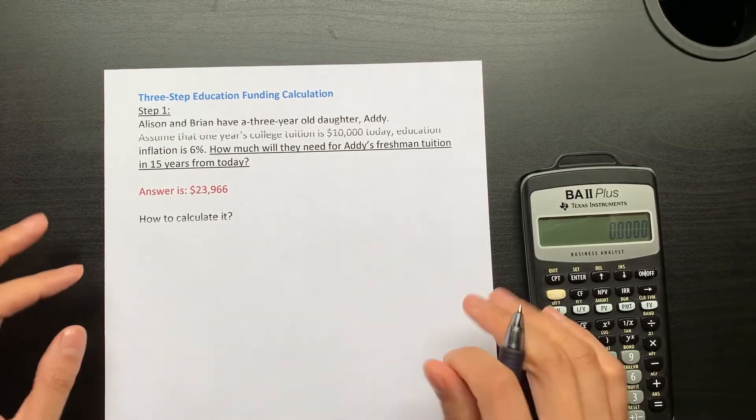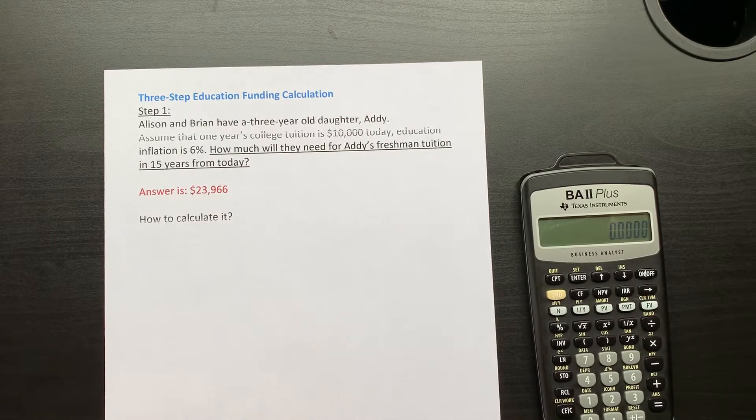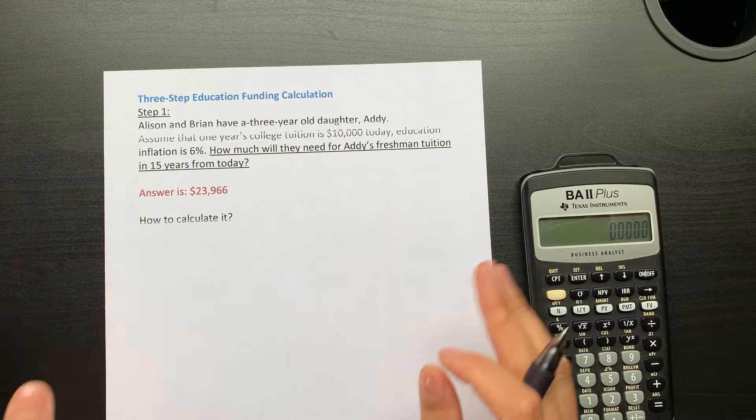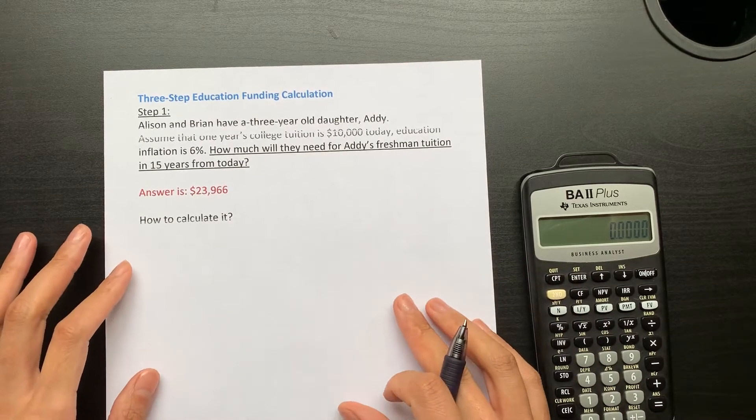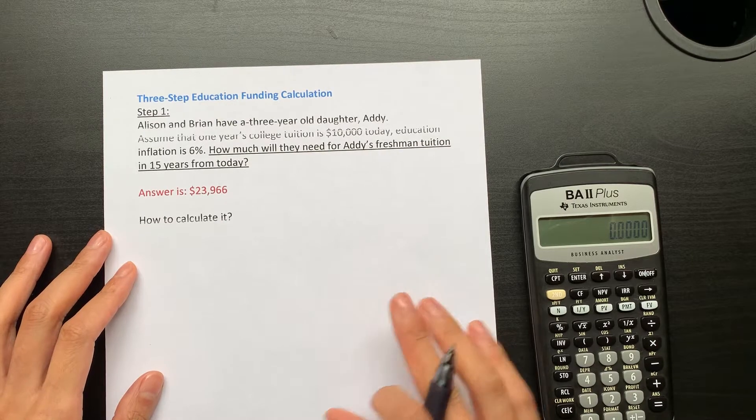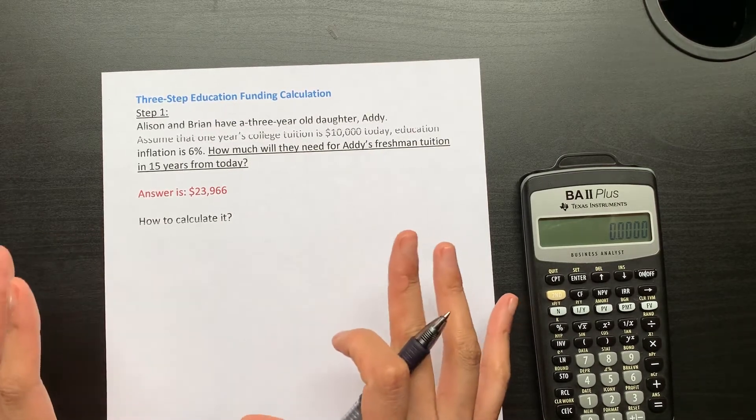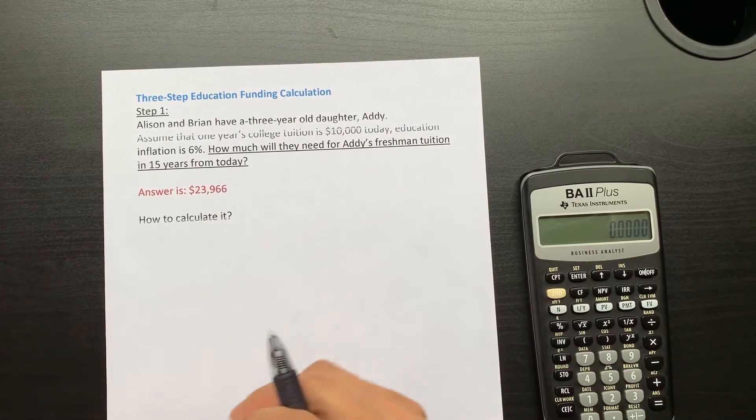In this video, I'm going to talk about three-step education funding calculation. This is usually used in the financial planning industry. Step one, this is an example. Alice and Brian have a three-year-old daughter.